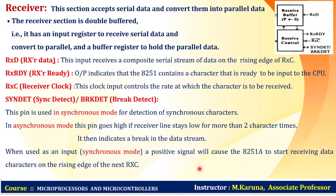In the receiver section, received serial data is converted from serial to parallel before being sent to the processor, since the processor is a parallel device. It also uses double-buffered registers — one input register receives serial data and another register converts the serial data to parallel and holds it.